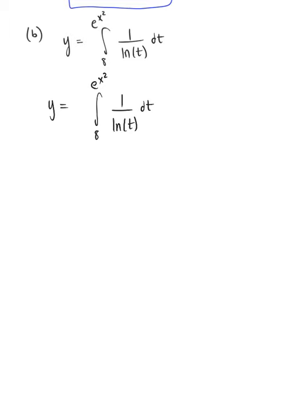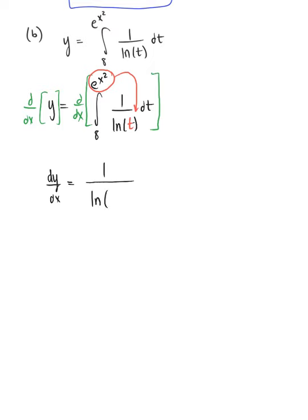So we want to take the derivative of both sides of the equation with respect to x. We take the d/dx of both sides, and again, remember the fundamental theorem of calculus tells us we can take our upper bound and plug it into the function to replace t — just don't forget to multiply by the derivative of the upper bound. So dy/dx is equal to 1 divided by the natural logarithm of e raised to the x squared, all multiplied by the derivative of our upper bound, which is d/dx of e raised to the x squared.